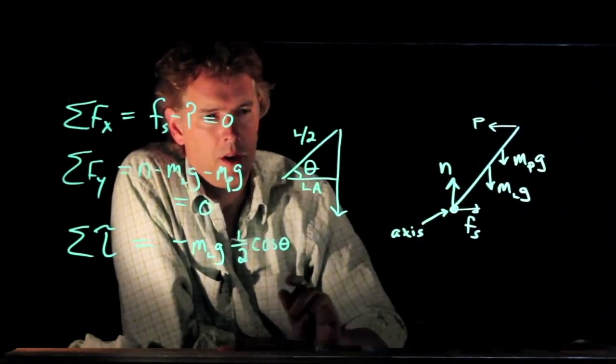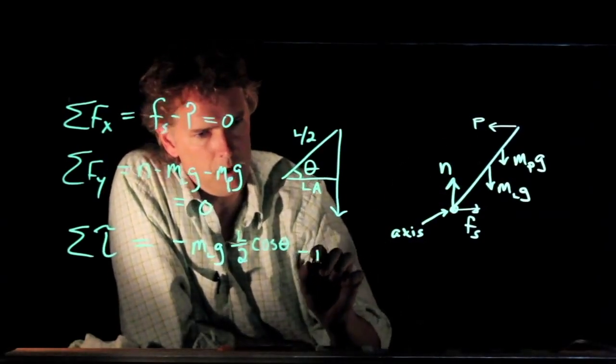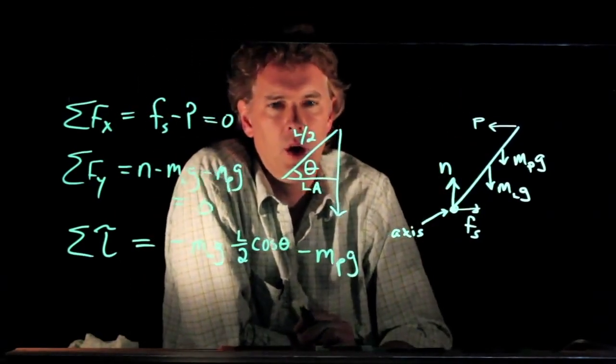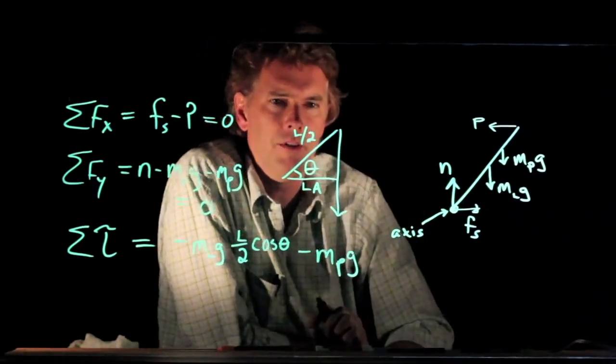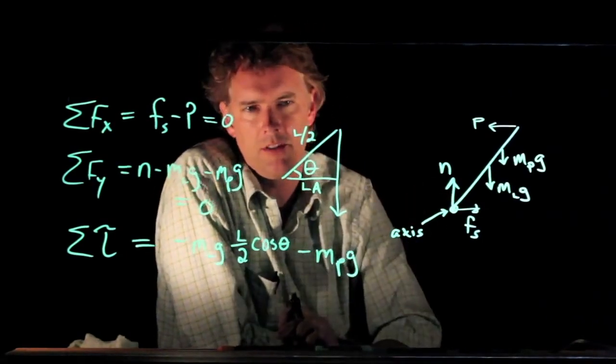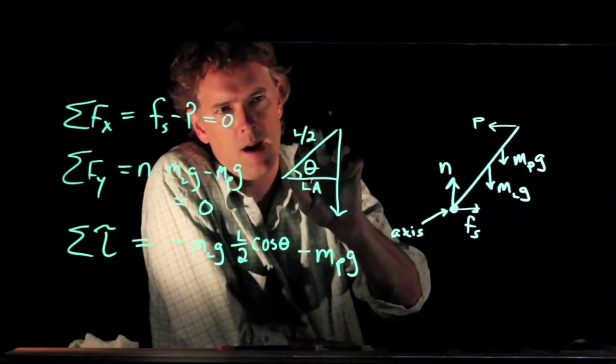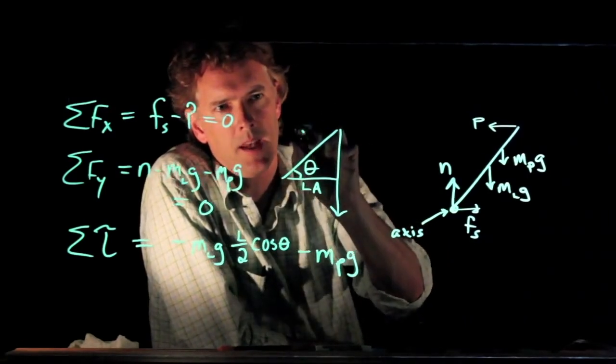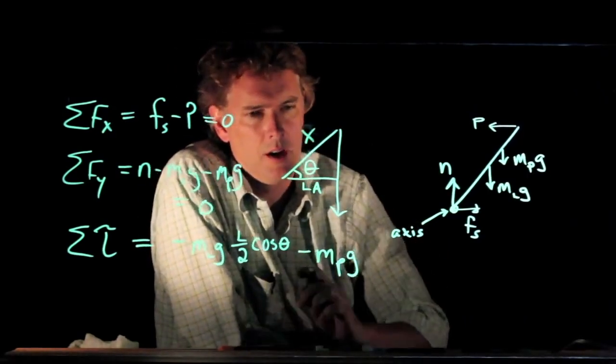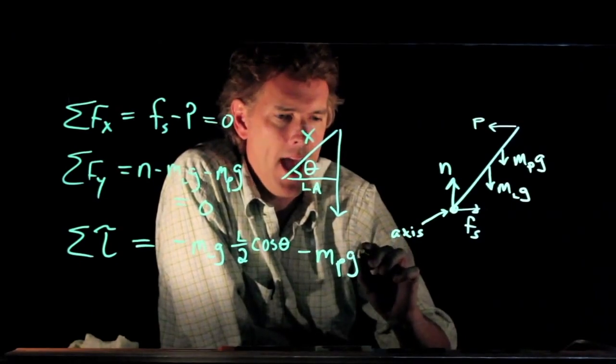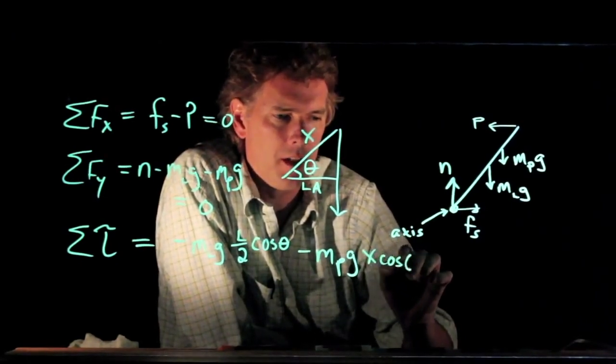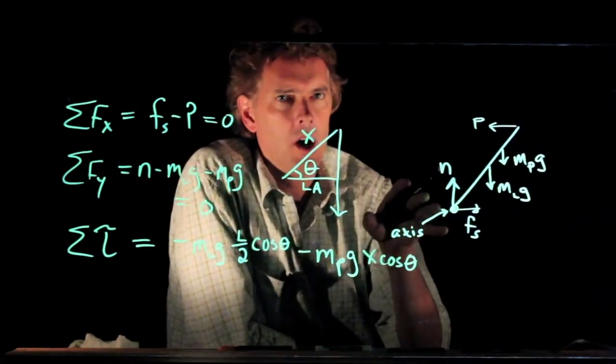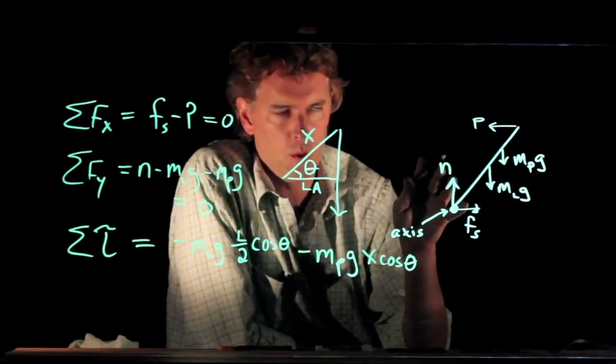Good. What about the person? The person is also trying to rotate this thing in the clockwise direction. What is the lever arm for the person? Well, it's the same idea as we just talked about right here, except the distance is no longer l over two, it is x. And so this becomes x cosine of theta.